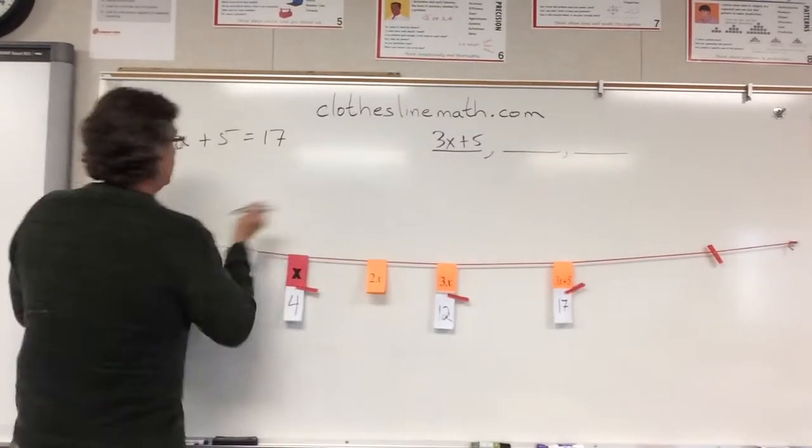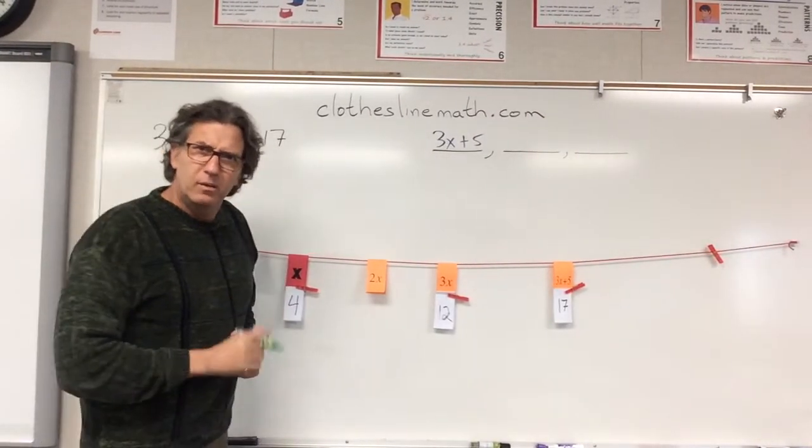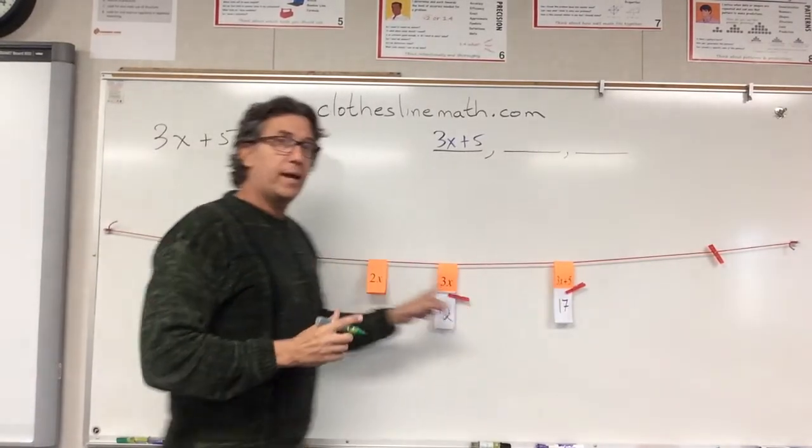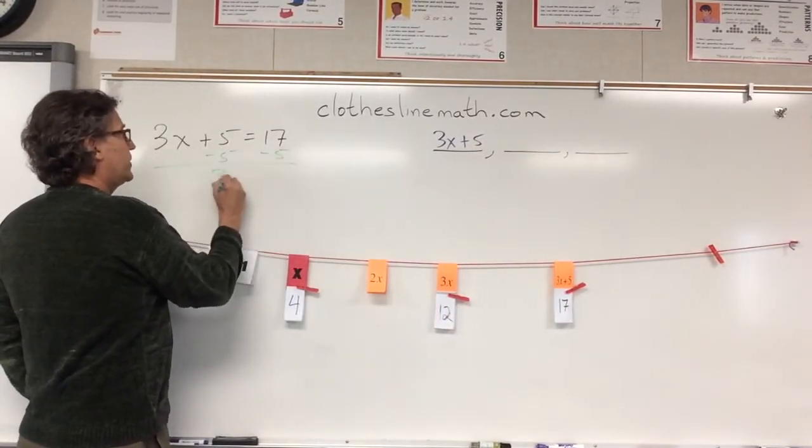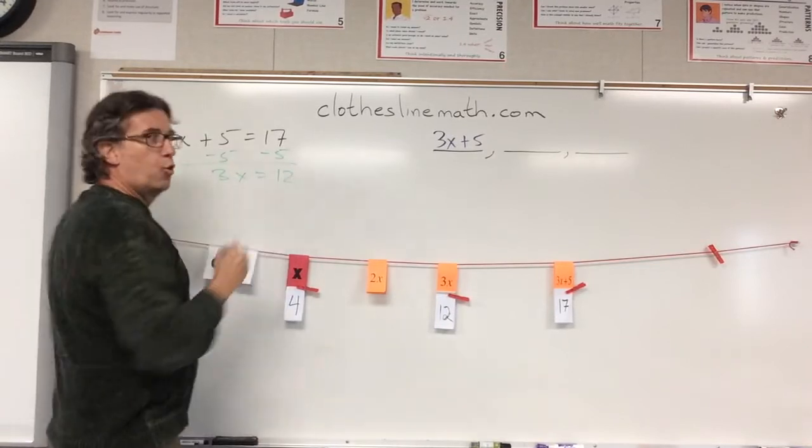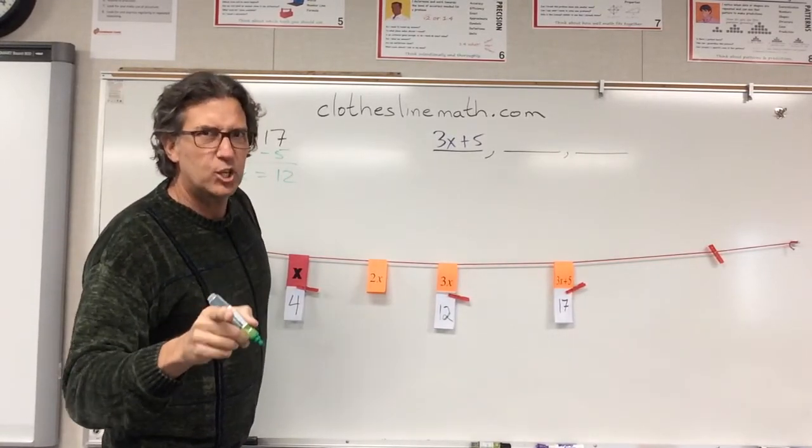And so, let me see if I got this straight, guys. What was the first thing we did? What was it? Oh, we started here. We counted backwards, 5. And we got to 3x equals 12. I know. That's pitching.